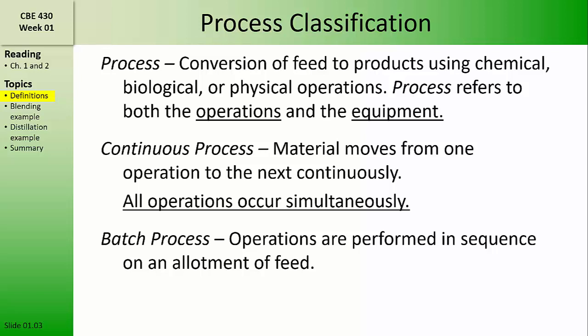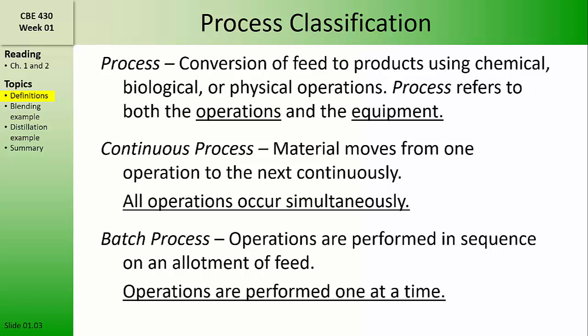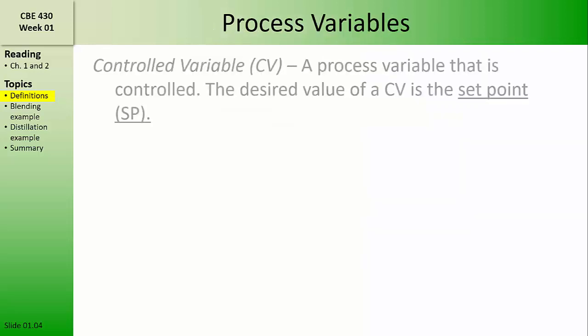And this is an important area, if you become a process control engineer. In batch processes, each operation is performed one at a time. We're going to use some common language to describe particular types of process variables. The first type is called a controlled variable. A controlled variable should have a setpoint, that is,